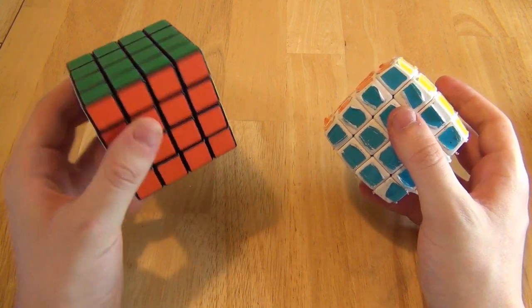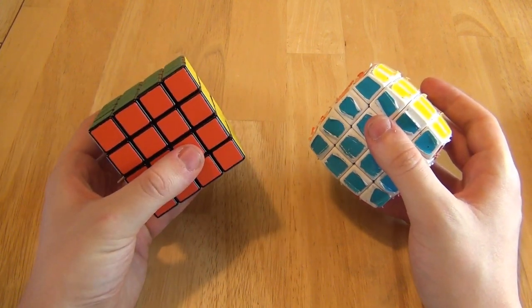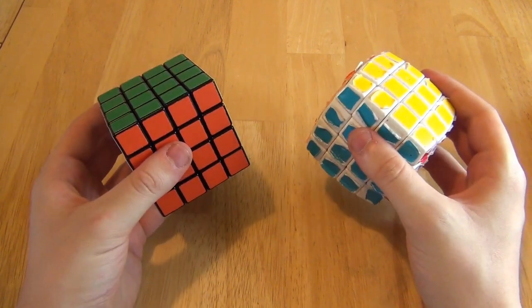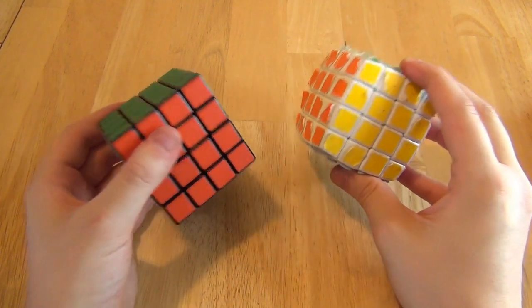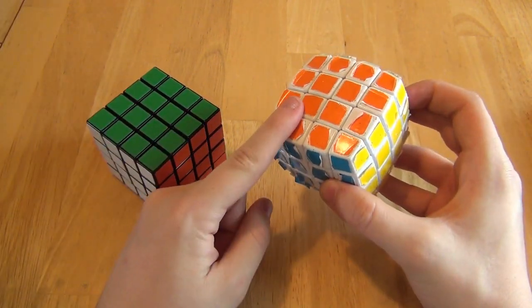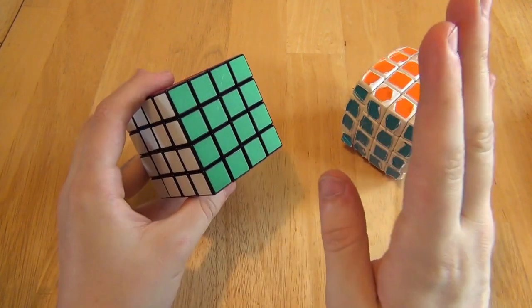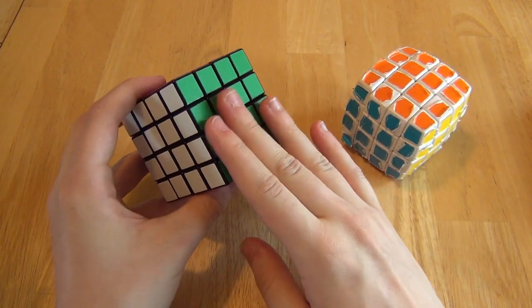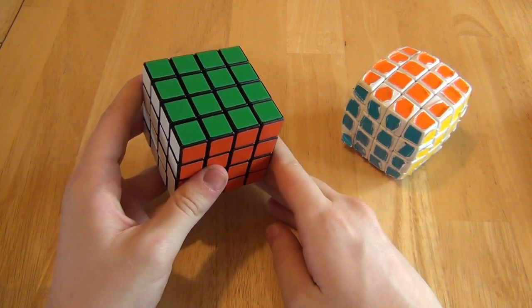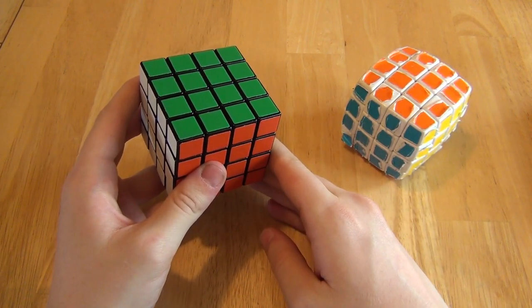Now whether or not that's the case with all the cubes is hard to say, considering that these are expensive cubes, and I'd rather not have to get more simply to compare. But I think it would be a safe assumption to say that the pillowed one is generally better than the flat one. But that poses a problem considering that the pillowed one isn't allowed in any competitions, while the flat one is. I would certainly recommend getting this one as your main speed cube, because it's the most legitimate cube out there. But that's going to be a call that you guys are going to have to make.